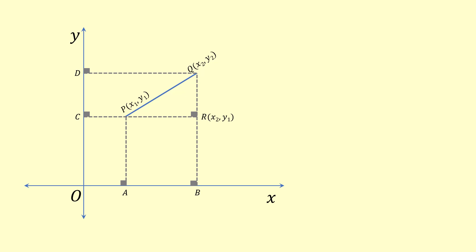If we are able to find the length of qr and pr, then we can apply Pythagoras theorem in triangle pqr. That is, pq is equal to square root of pr square plus qr square.